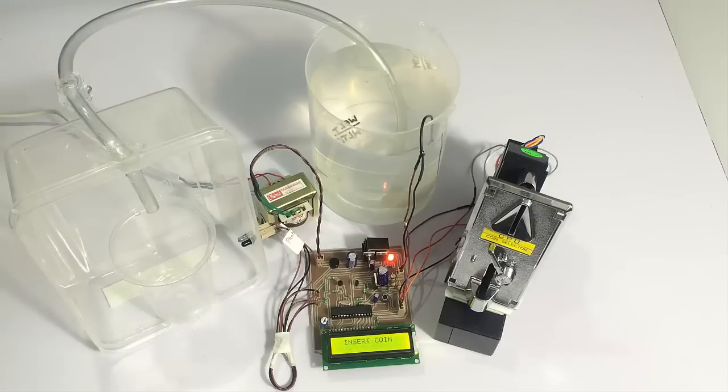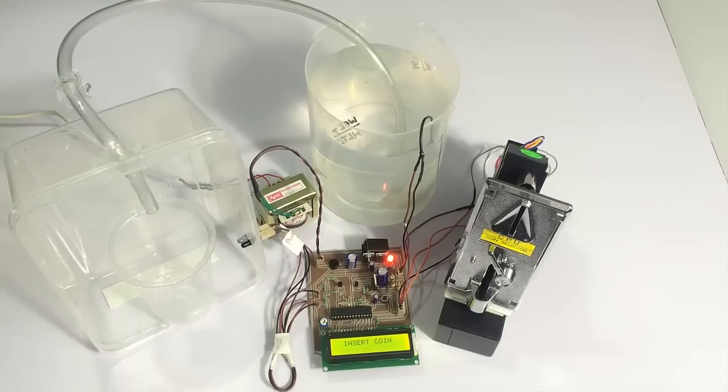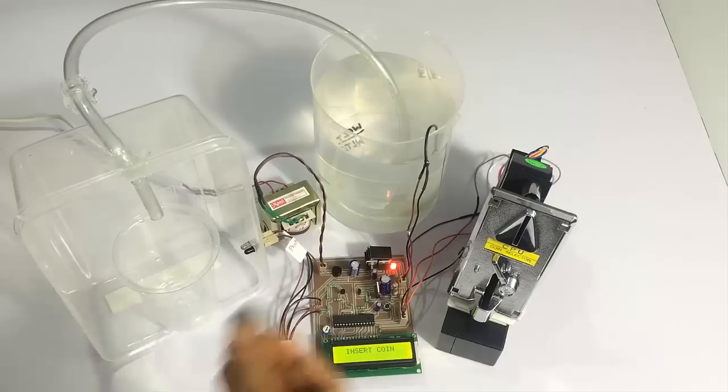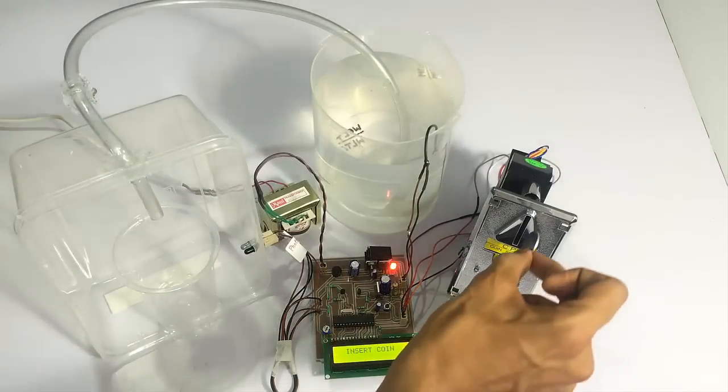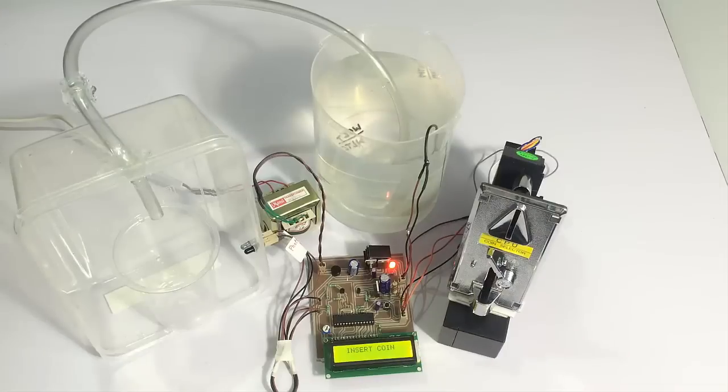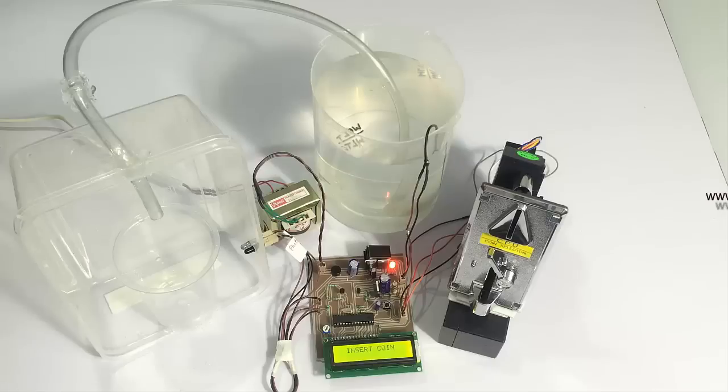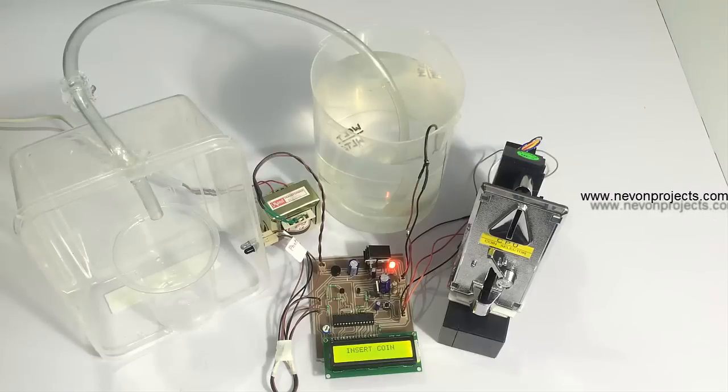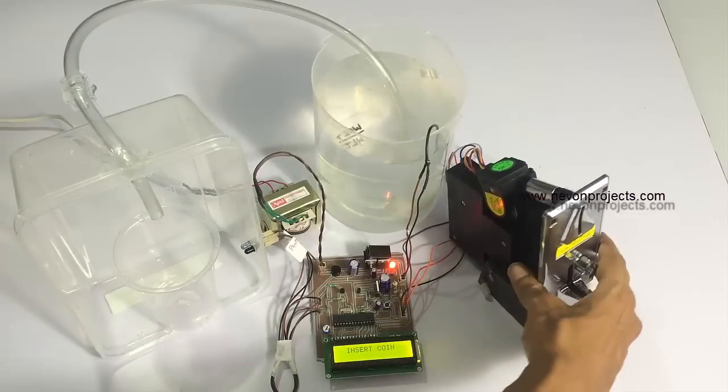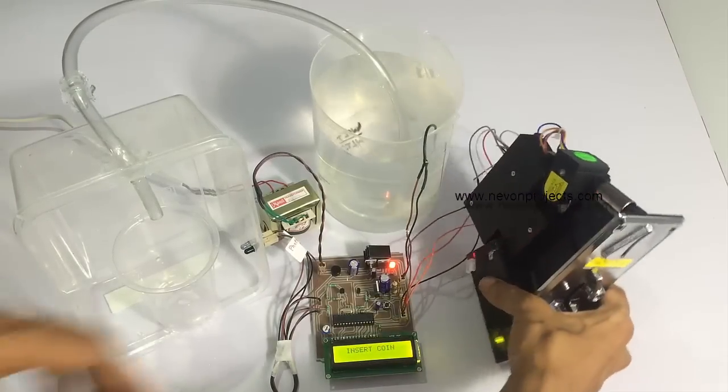So the system is now running and it is waiting for a coin. First, let's see what happens if we insert an invalid coin. As you can see, the coin was not valid, hence it didn't start the supply. You can use any coin here. When you get this system, you can set a coin here in the module, and based on that coin, it will recognize only that particular kind of coin and reject all other coins.